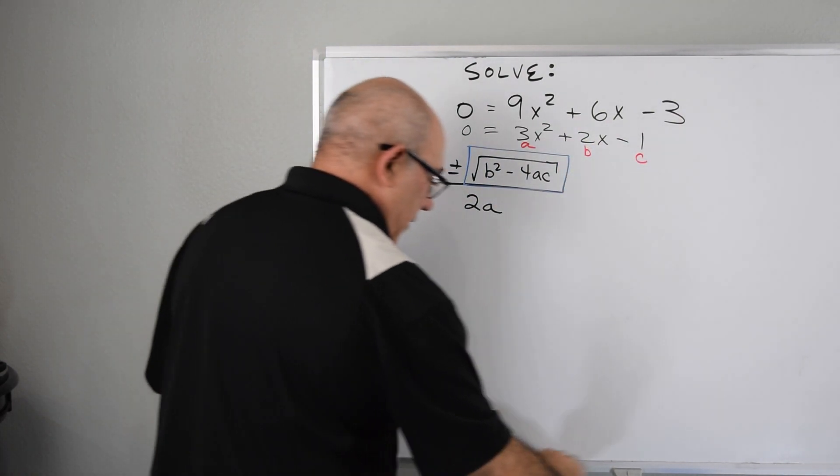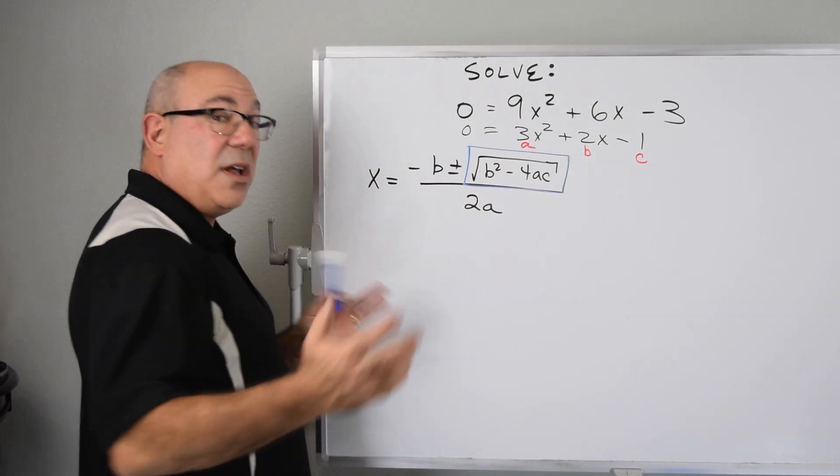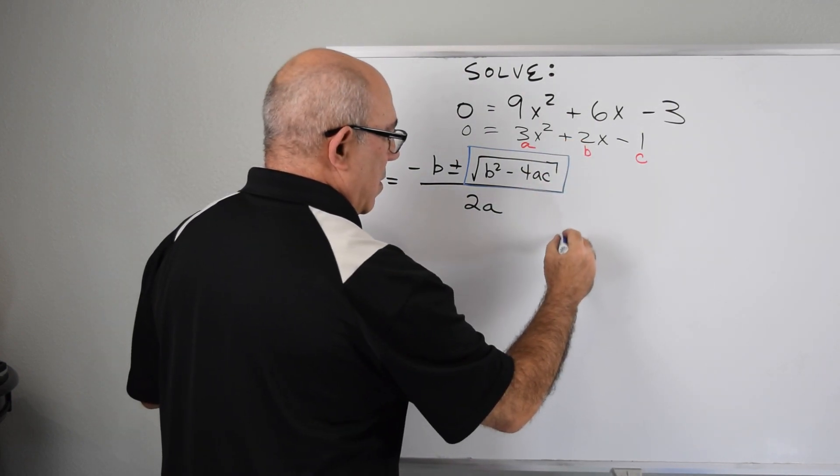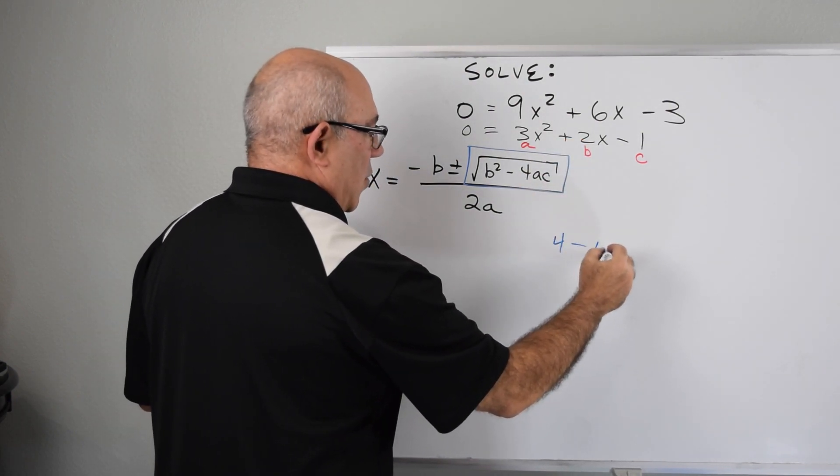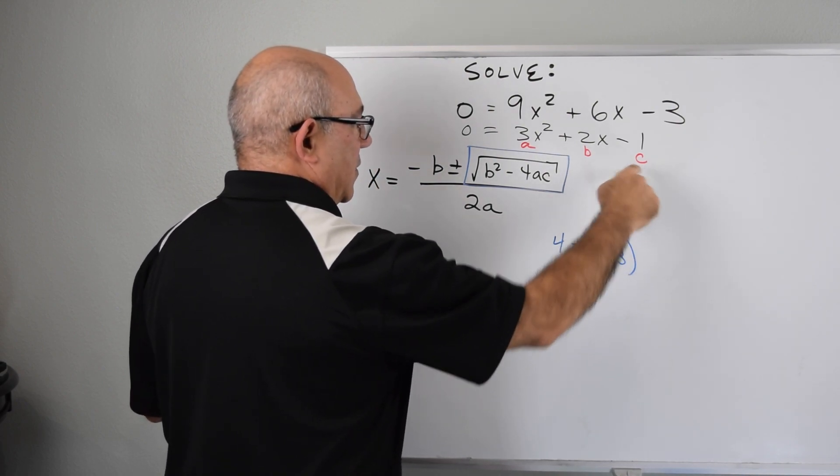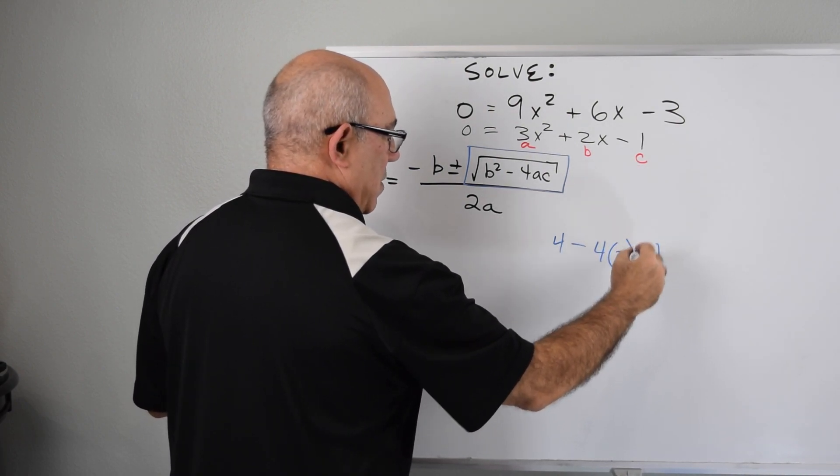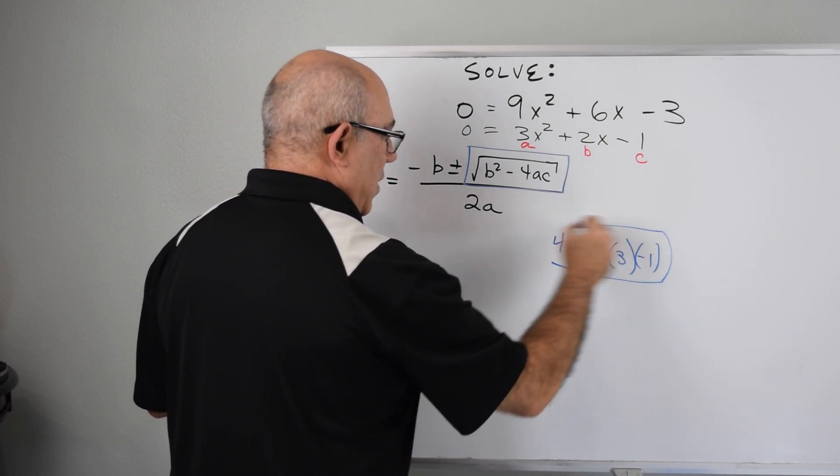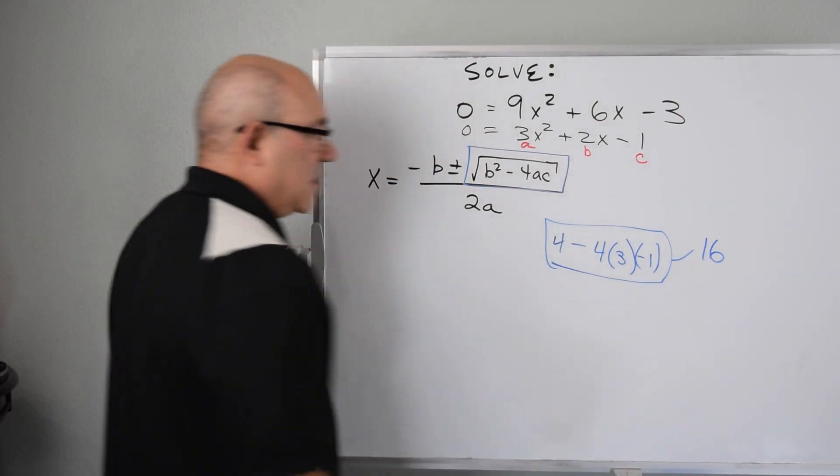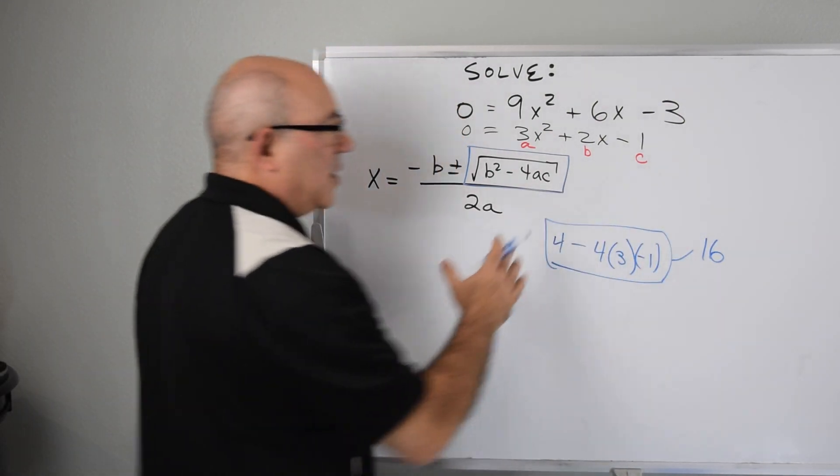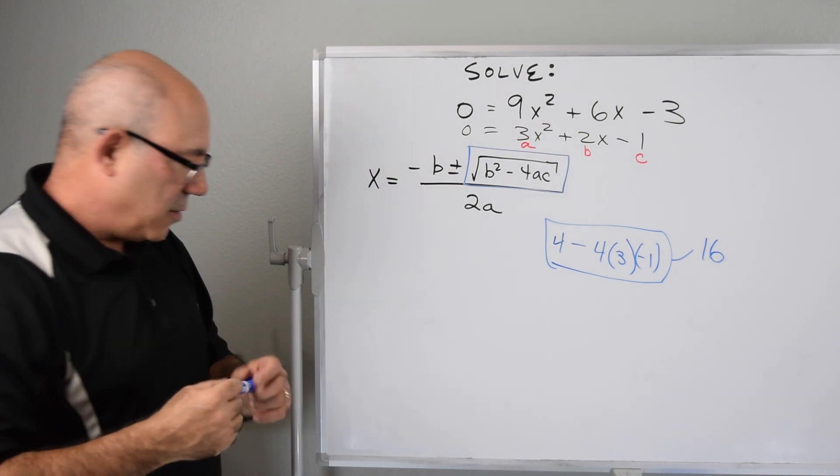So let's plug in and figure out where we are. Are we in the real world or the imaginary world? So b squared is going to be 4 minus 4 times a, which is 3, times c, which is minus 1. So this is a positive. So this is all going to equate to 16. So since 16 is real, that is greater than zero, then we know we're in the real world.